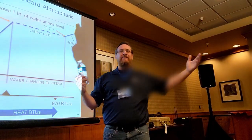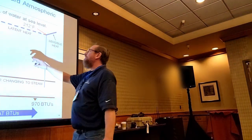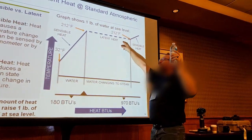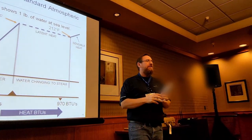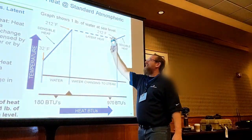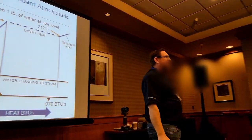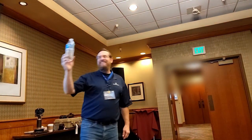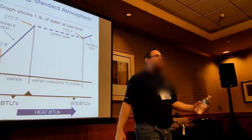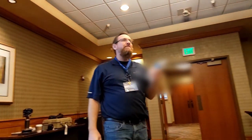32 liquid, 212 liquid. Now, if we made this change state from a liquid to a vapor at the same temperature — 970 BTUs of heat energy. Now, if 180 was significant, what about 970? That's latent heat. Sensible heat is a change in temperature, but latent heat — it didn't change temperature at all. 970 BTUs.